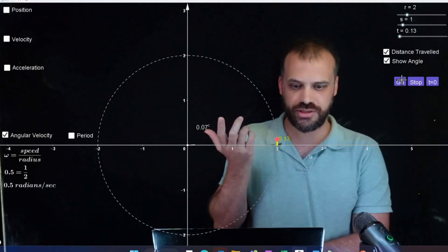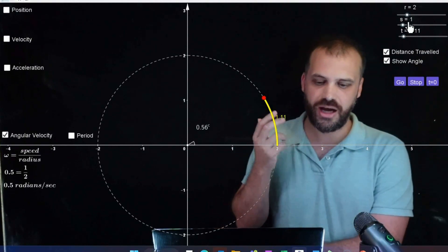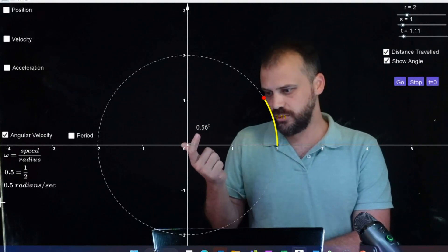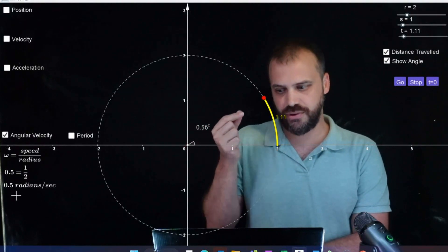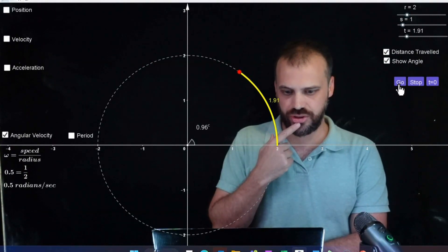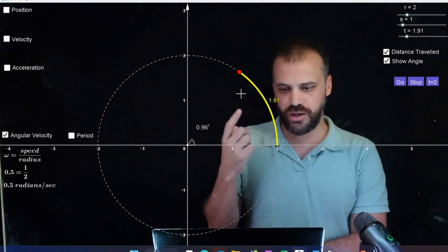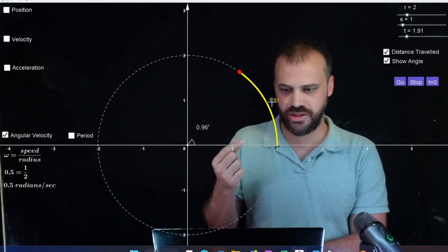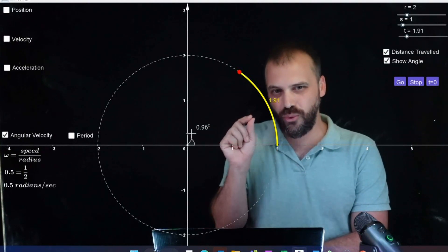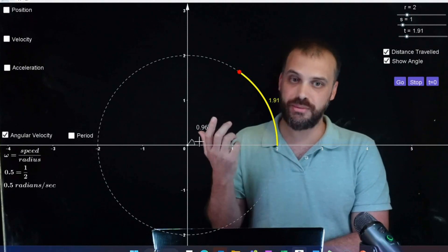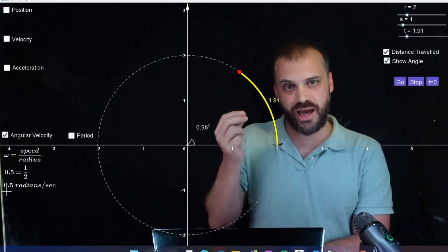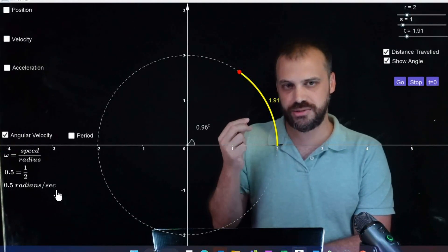Alright, let's press go and just watch this. Okay, and stop. Okay, after about one second, you can see we've covered about half a radian. We're traveling at 0.5 radians per second. And go and stop. After 1.19 seconds, we've traveled 1.91 meters, which is equal to almost one radian. Because remember, the radius of this circle is 2. So we are traveling with an angular velocity of 0.5 radians per second. This is a new unit. You've never seen it before.